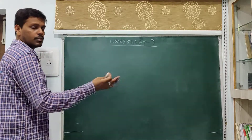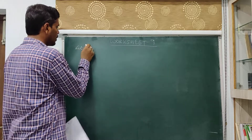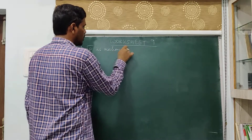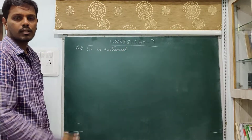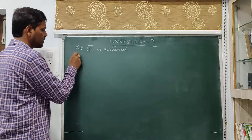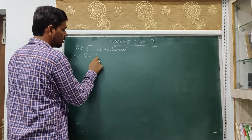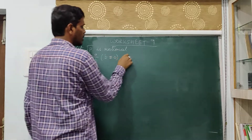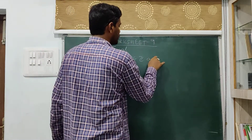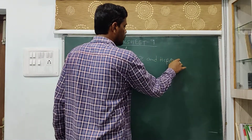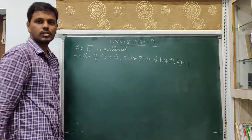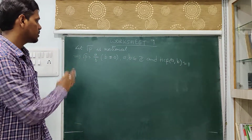So let us assume root p is rational. When root p is rational, you can write it in the form a by b. So root p equals a by b, where b is not equal to 0, a and b are integers, and the HCF of a and b equals 1. This is the standard statement you always take whenever you assume a rational number.